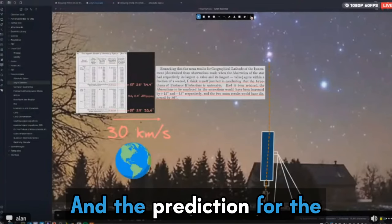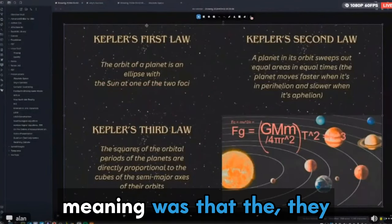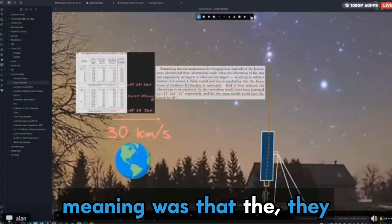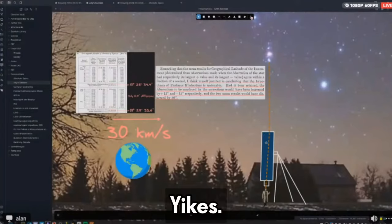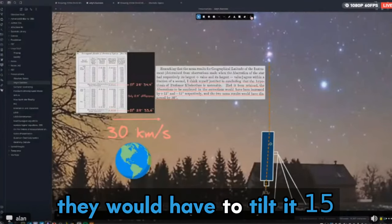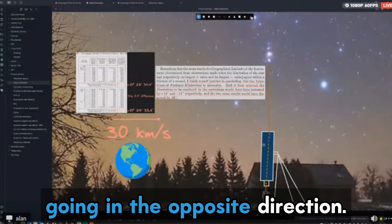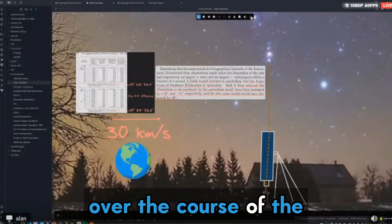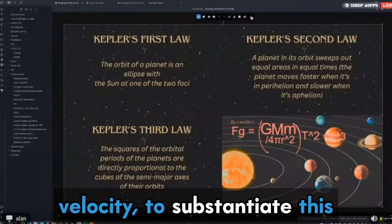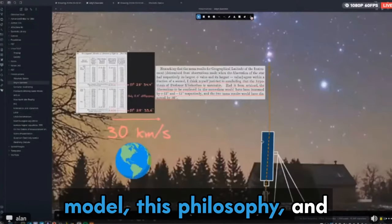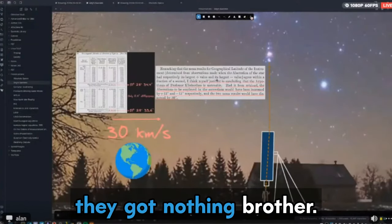And the prediction for the heliocentric model, right, for these to have physical meaning was that they were going to have to tilt the telescope by 15 arc seconds. Yikes. And then later in the year, they would have to tilt it 15 going in the opposite direction. So a total of 30 arc seconds over the course of the year to substantiate this velocity, to substantiate this model, this philosophy. And they got nothing, brother, nothing.